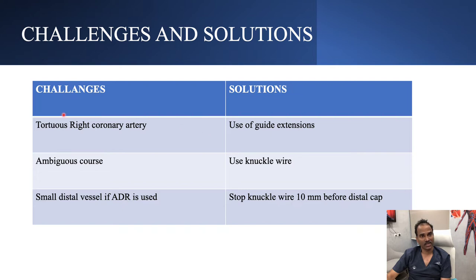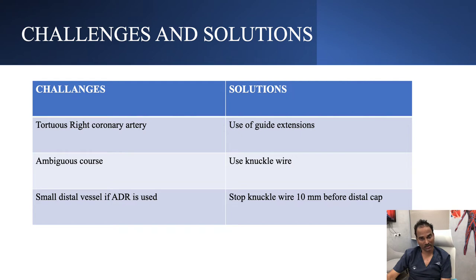Challenges in this case: tortuous right coronary artery - you can use guide extensions to do antegrade wire escalation as well as to send IVUS catheter inside. Also, when using ADR it prevents intramural hematoma. Ambiguous course can be overcome by using a knuckle wire. Small distal vessel, if ADR is used, is also a challenge. Always make sure you stop knuckle wire at least 10 millimeters before distal cap, not to spoil your re-entry zone.